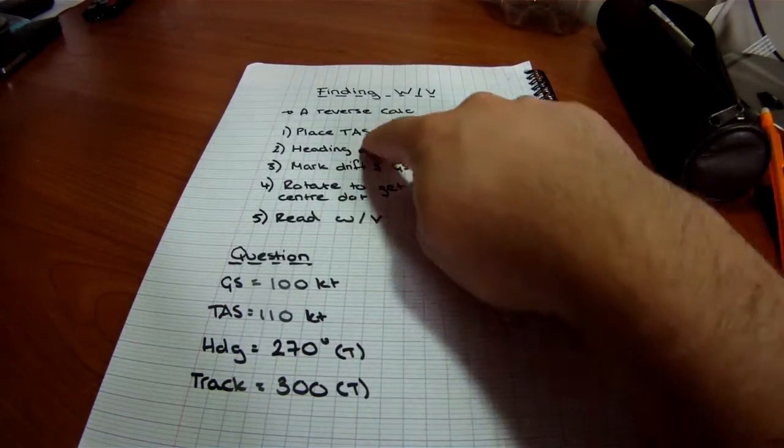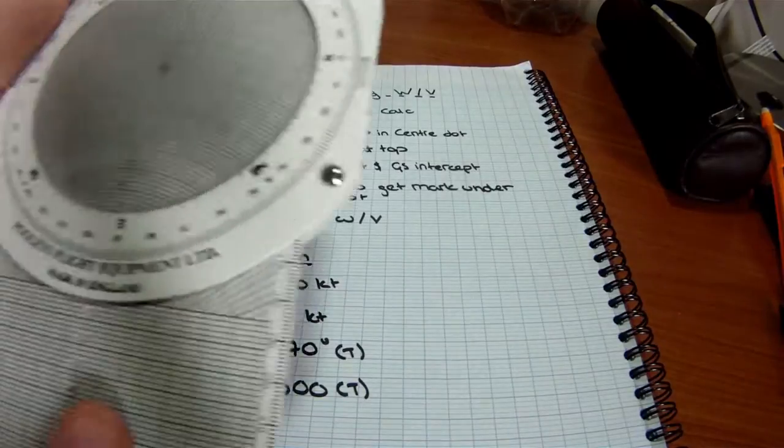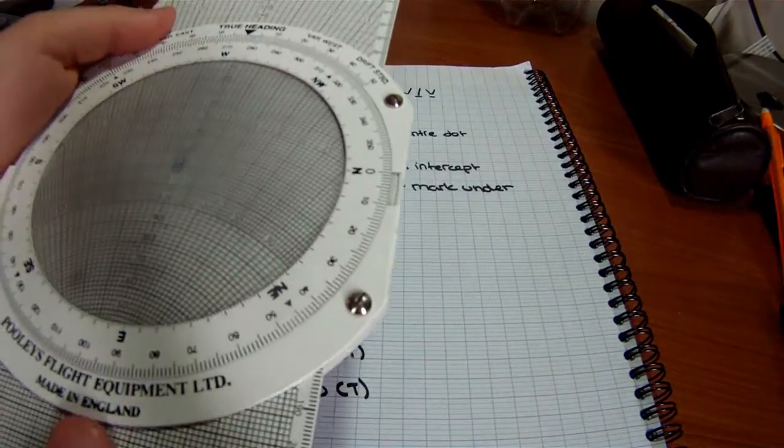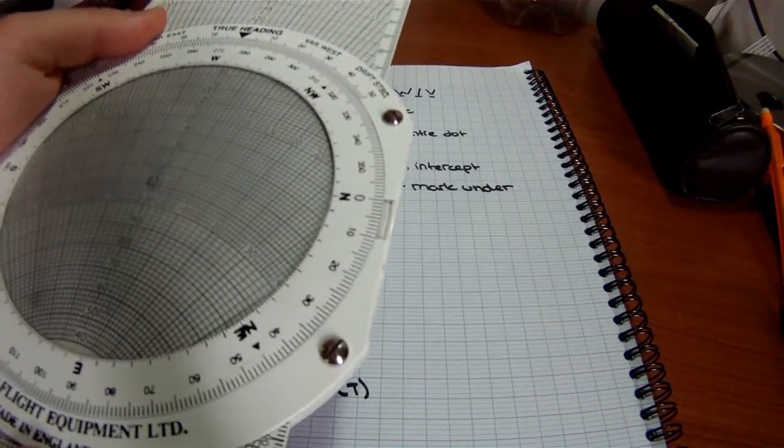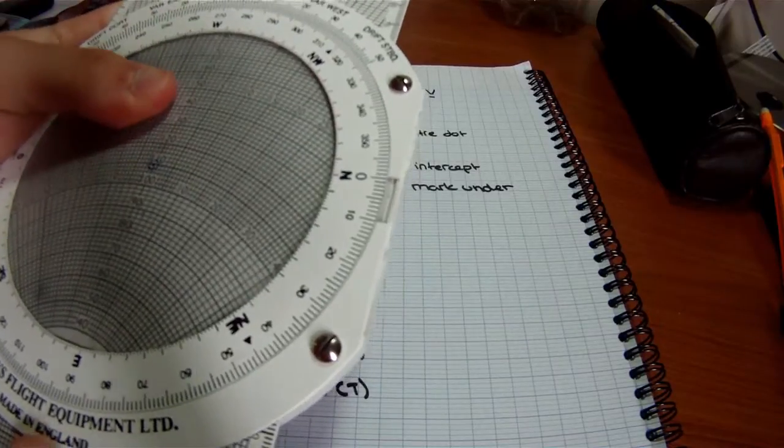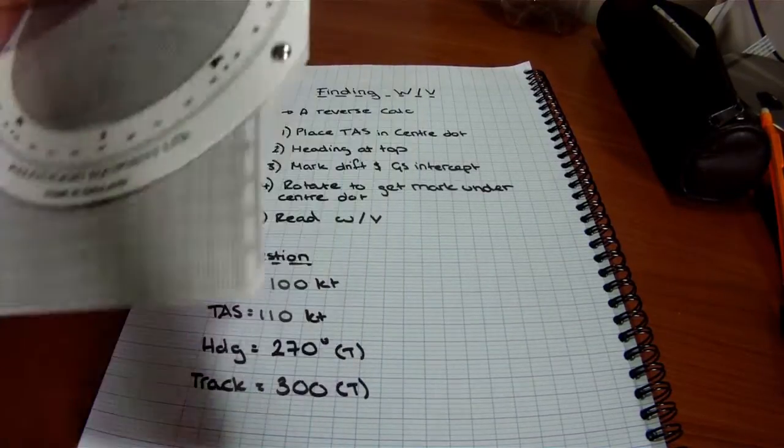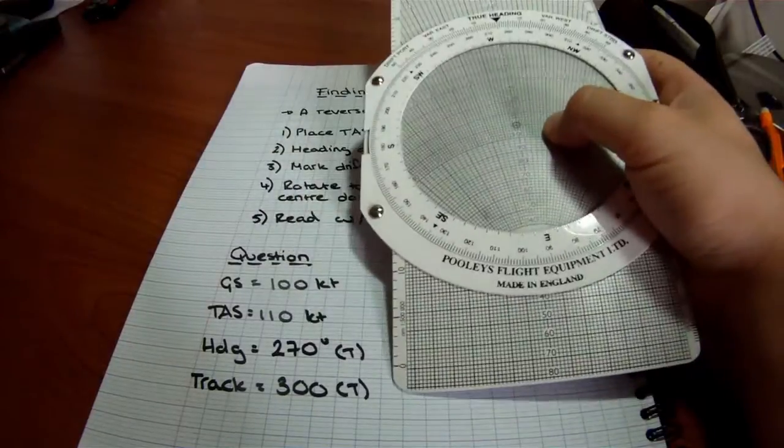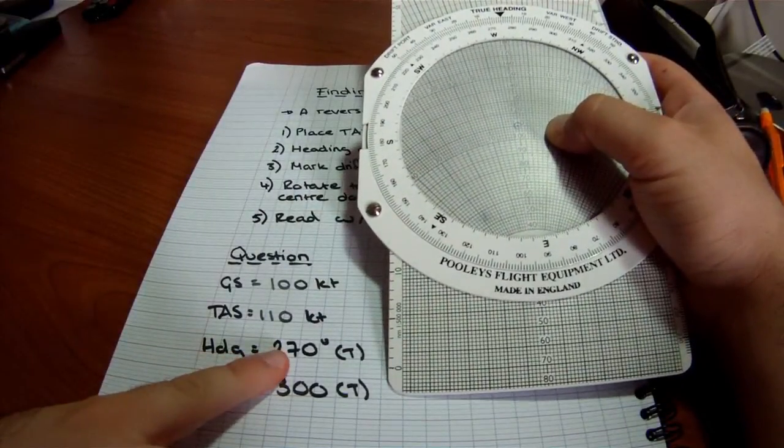So you find the TAS is 110. Just so you know, there are a lot of these questions in the general navigation in the ATP exams. Okay, so you've got TAS 110 knots.